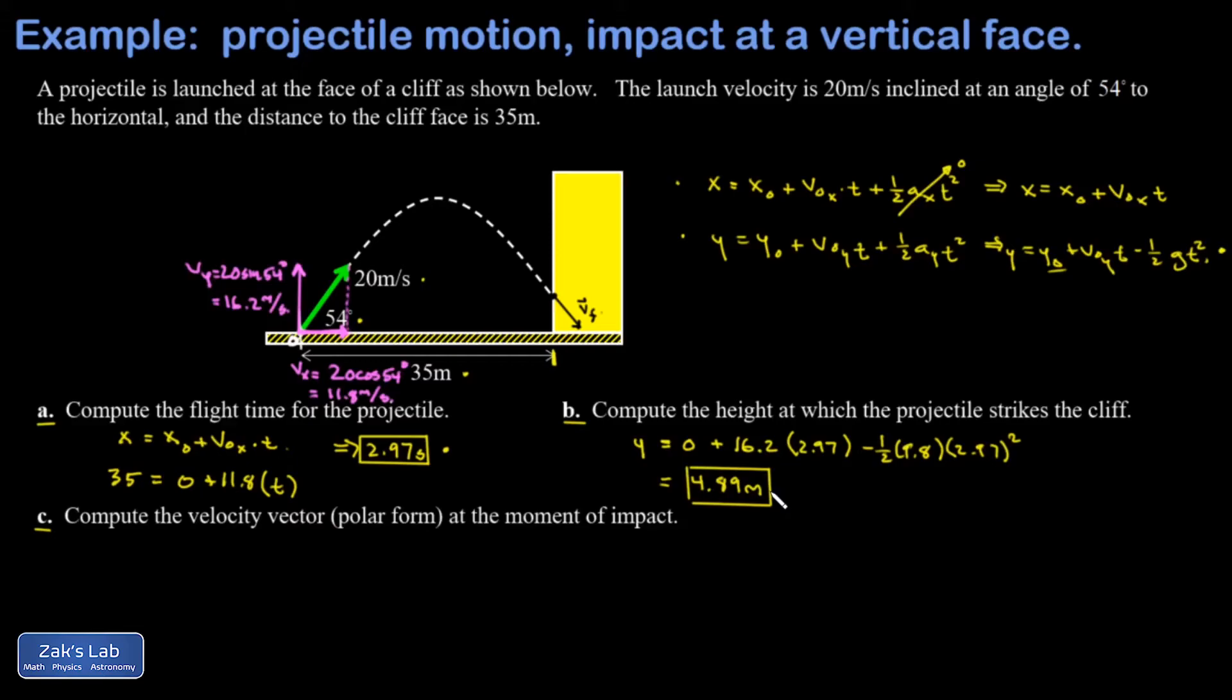Finally, we want to get the velocity vector at the moment of impact. The way you approach this is you get the velocity components at the moment of impact, and then we're going to combine those into polar form. The x one is the easy one: the x velocity at the moment of impact equals the x velocity at the moment of the launch because the x velocity never changes—there's no acceleration horizontally—so that's just going to be 11.8 meters per second.